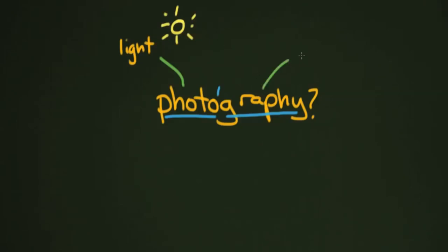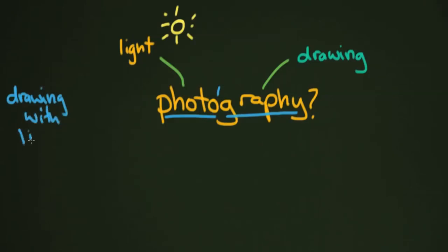Then you've got 'graphy,' which sort of means something along the lines of drawing. So when you put those two things together, you come up with 'drawing with light,' which I think is a really great way of describing what photography is. Photography really is, in a lot of ways, drawing with light.